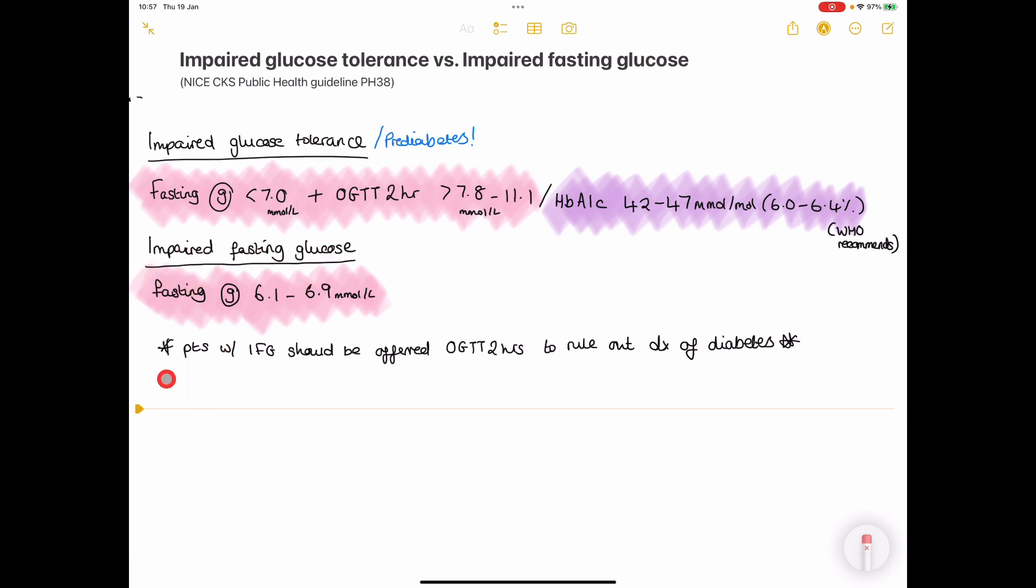NICE recommend every patient with a diagnosis of impaired fasting glucose should be offered an oral glucose tolerance test at 2 hours to rule out a diagnosis of diabetes.